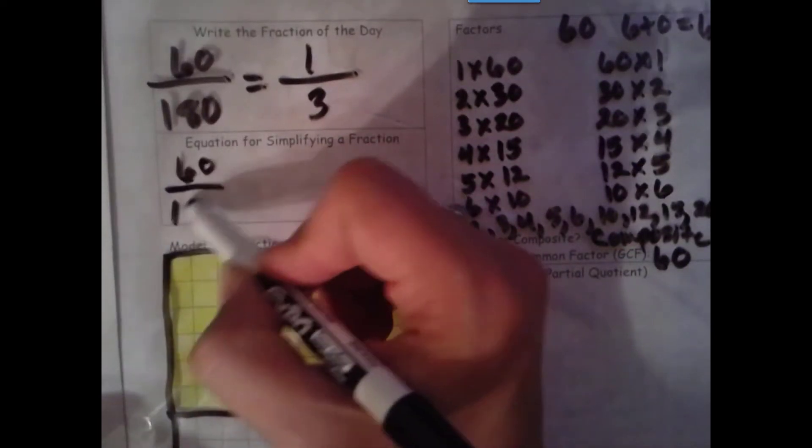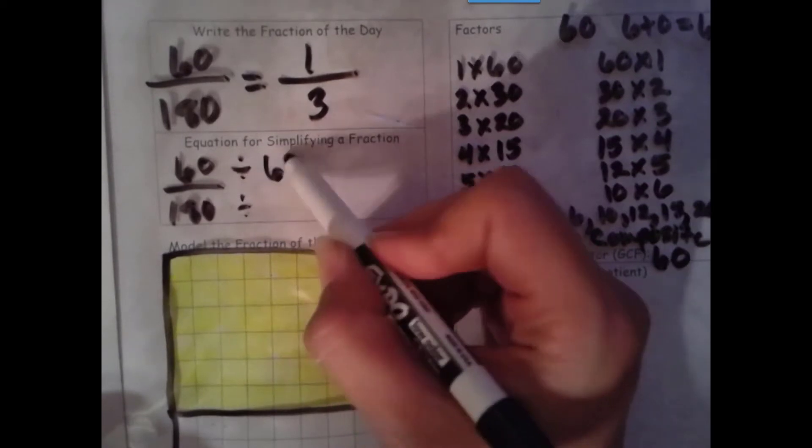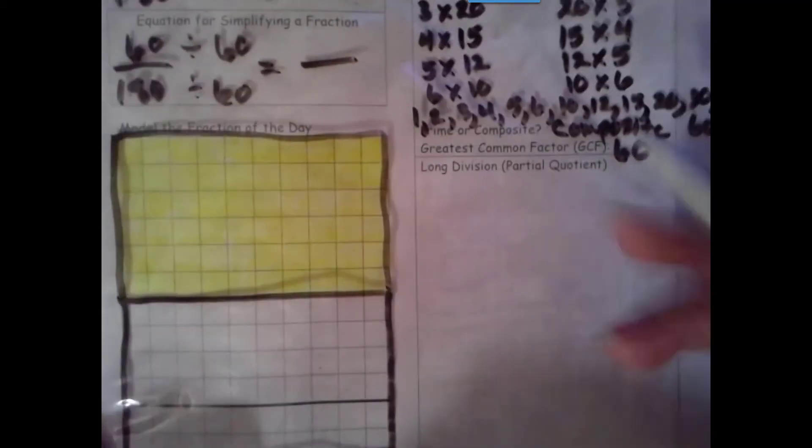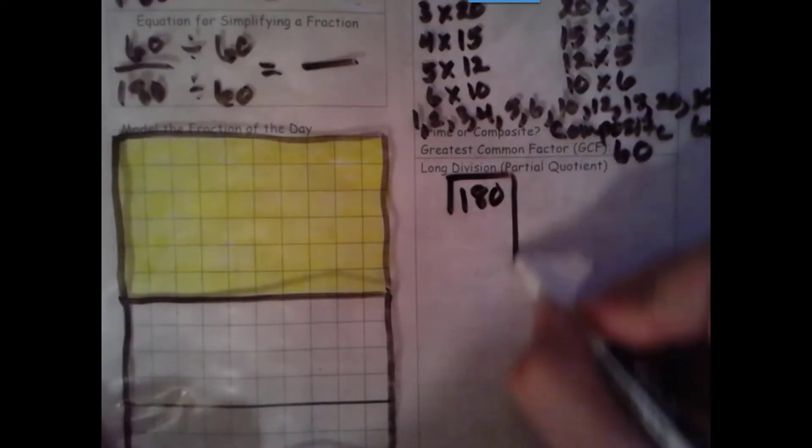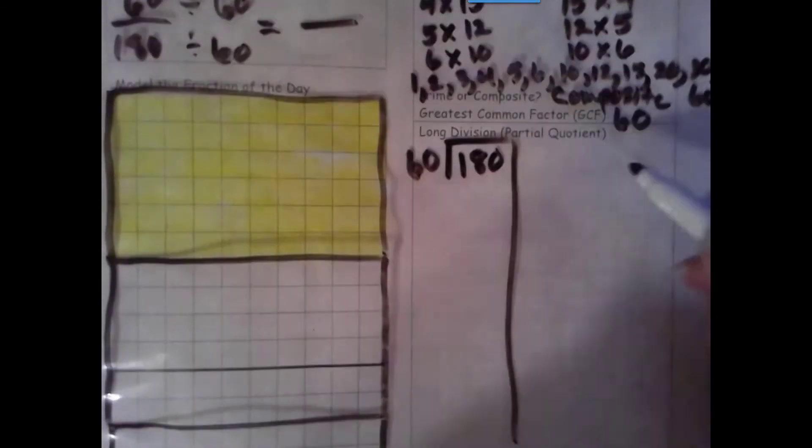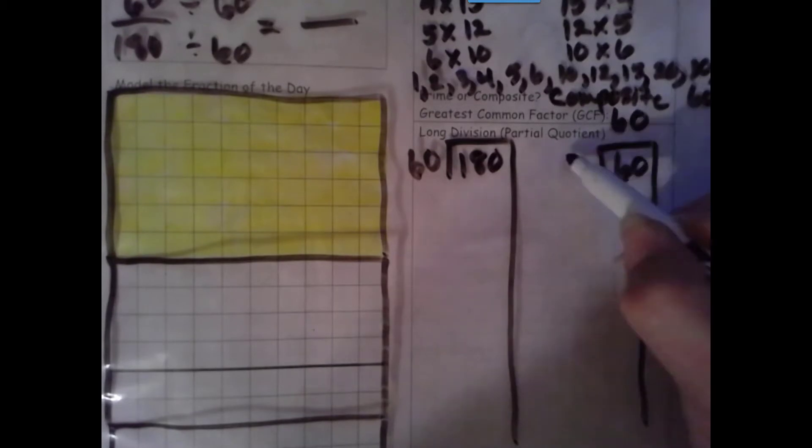Now that we did our division with our model, let's go ahead and do the division with our algorithm. Divide by our greatest common factor.